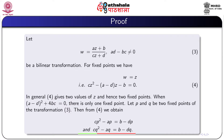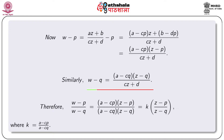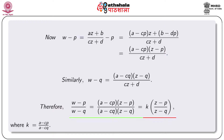Now W minus P is equal to Az plus B by Cz plus D minus P, and this gives after simplification (A minus CP) times (Z minus P) by (Cz plus D). Similarly, we obtain W minus Q equal to (A minus CQ) times (Z minus Q) by (Cz plus D). Therefore, we obtain the ratio (W minus P) by (W minus Q) equal to (A minus CP) times (Z minus P) by (A minus CQ) times (Z minus Q).